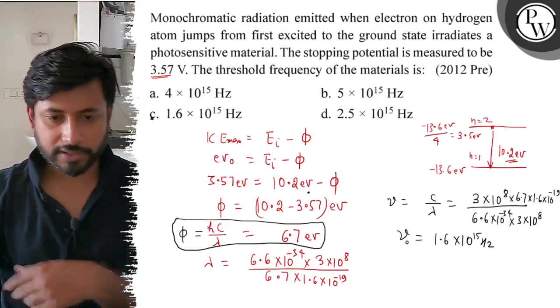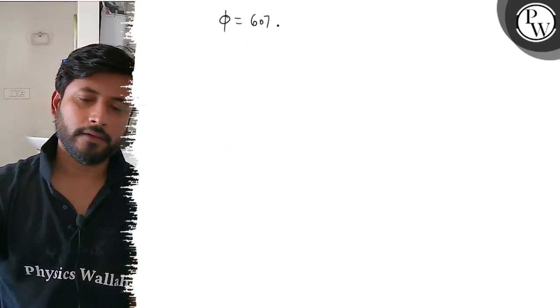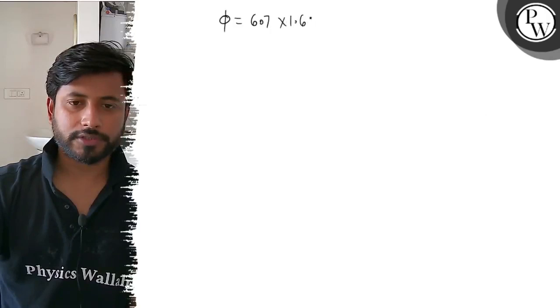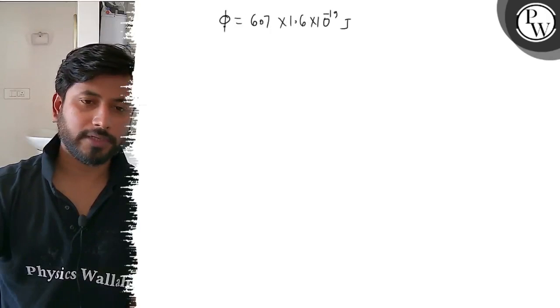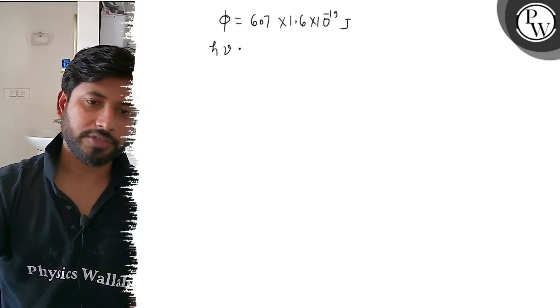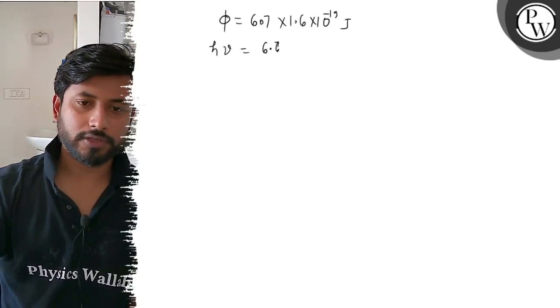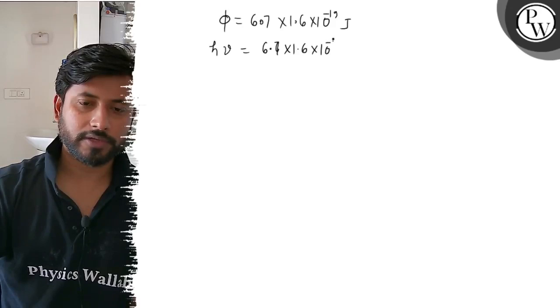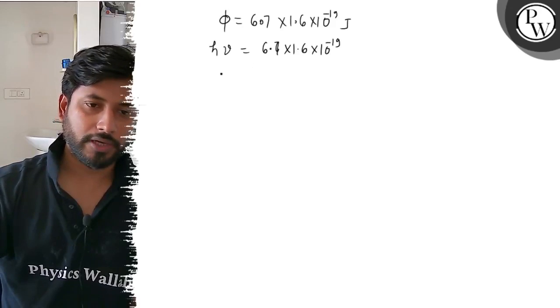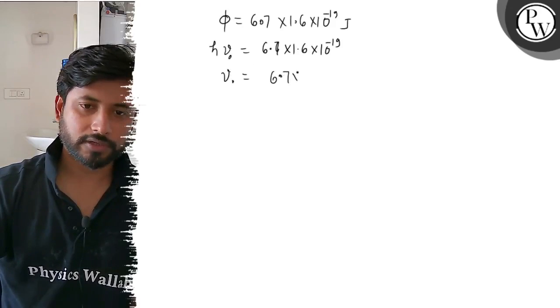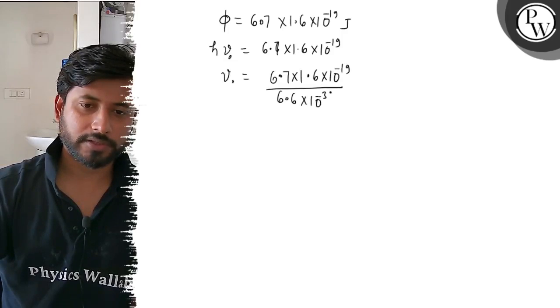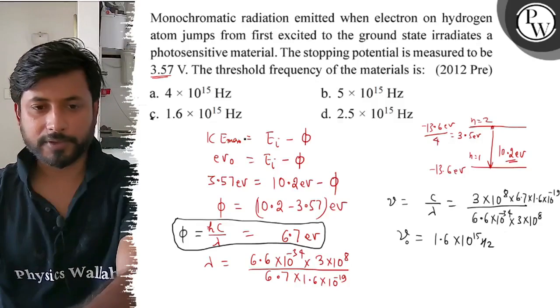Directly we can take the value of φ as 6.7 electron volt equals 6.7×1.6×10^-19 joules. Since φ equals hν, threshold frequency ν equals (6.7×1.6×10^-19) divided by h value (6.6×10^-34).